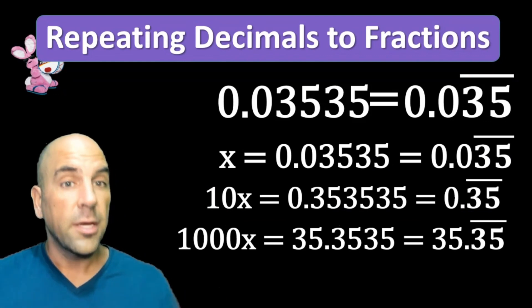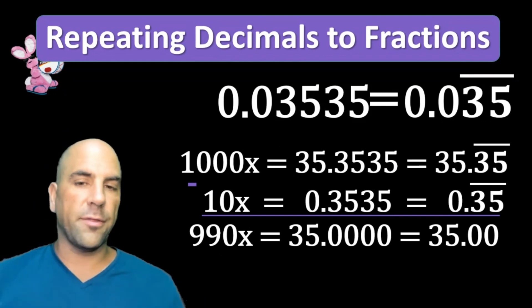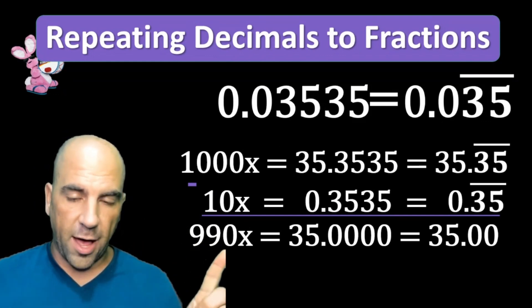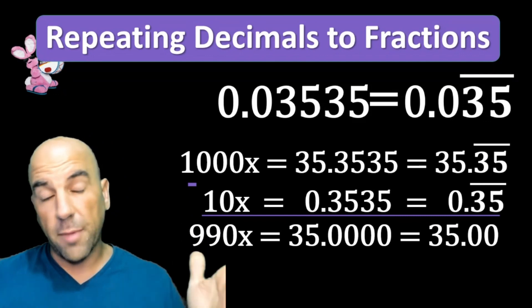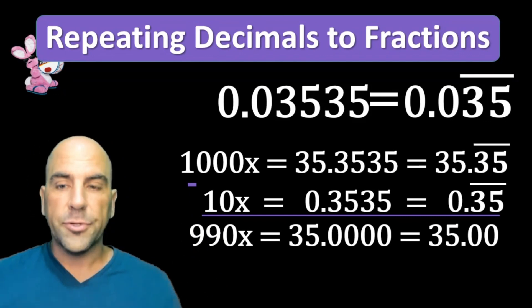Look, it's that simple. We're going to get rid of the 0.35 repeating—the decimal is gone. And 1000 minus 10 is 990. So we have 990x equals 35.